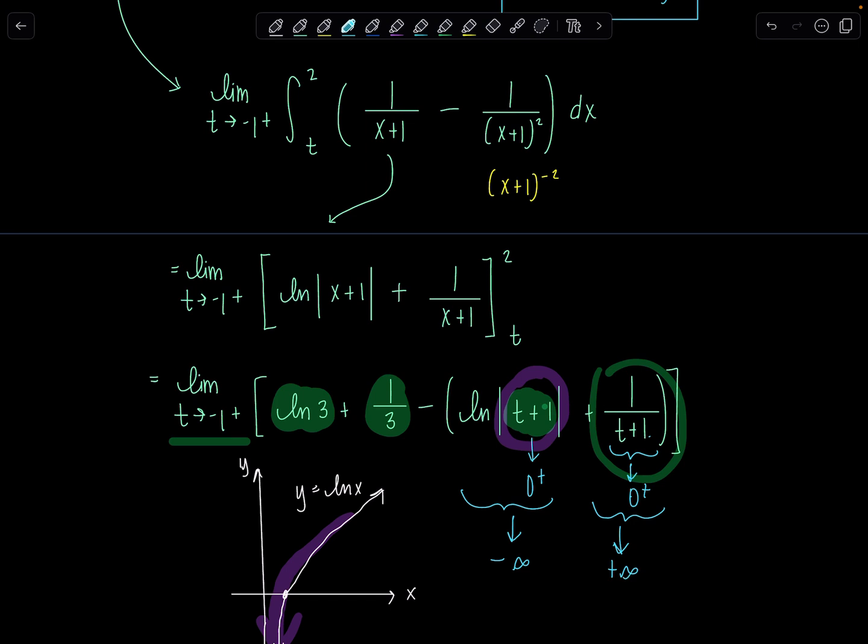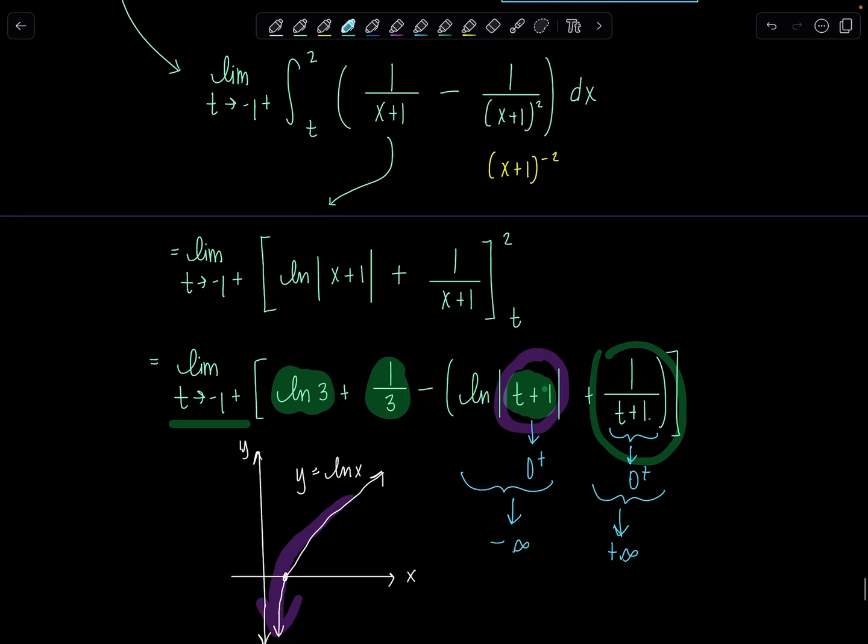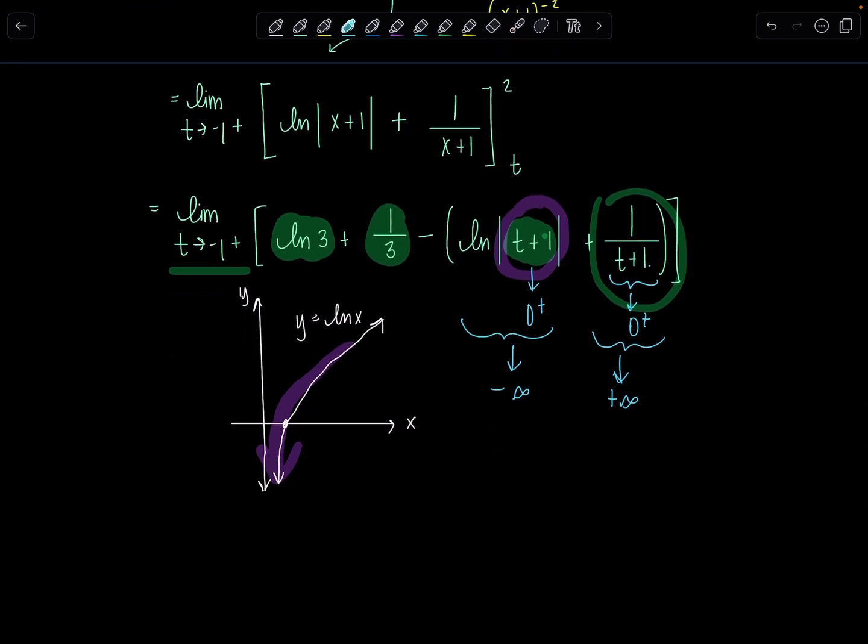But then what about that entire term then? So 1 over something getting very, very small that's positive is going to go to positive infinity. This whole thing goes to positive infinity. If you need to review your infinite limits, I'll link a video in the description that I have. So this is problematic. Why is it problematic? Because we have negative infinity plus infinity. That's an indeterminate form. Infinity minus infinity, but it's just rearranged. Negative infinity plus infinity is indeterminate.